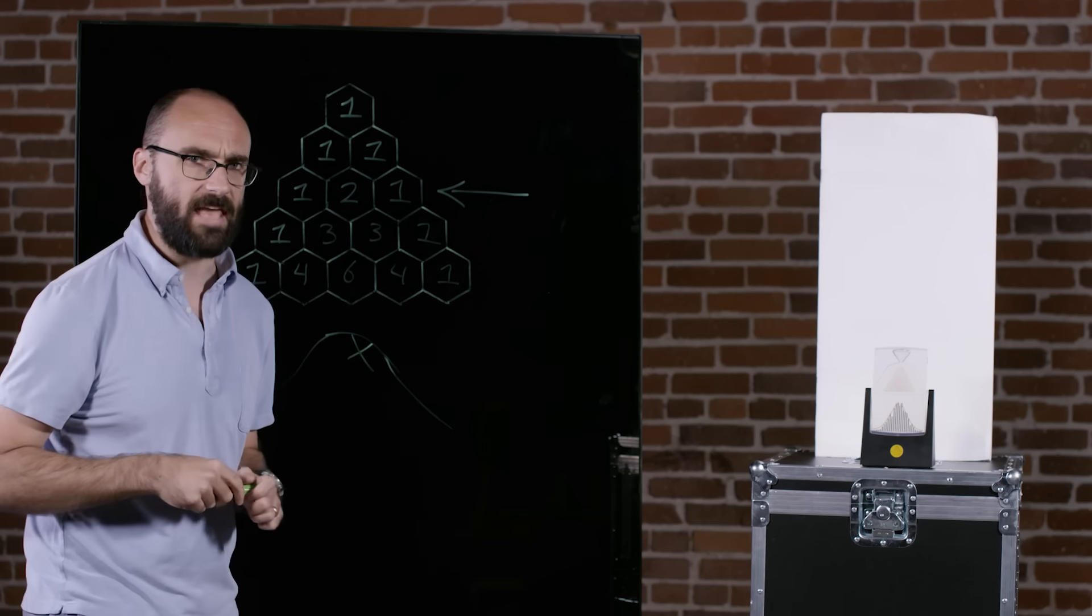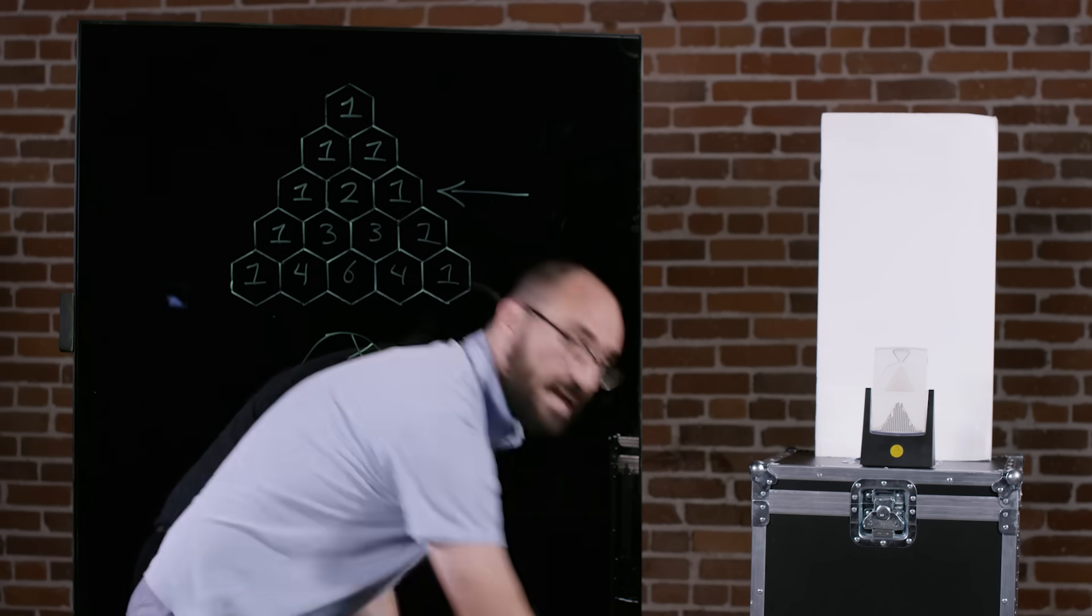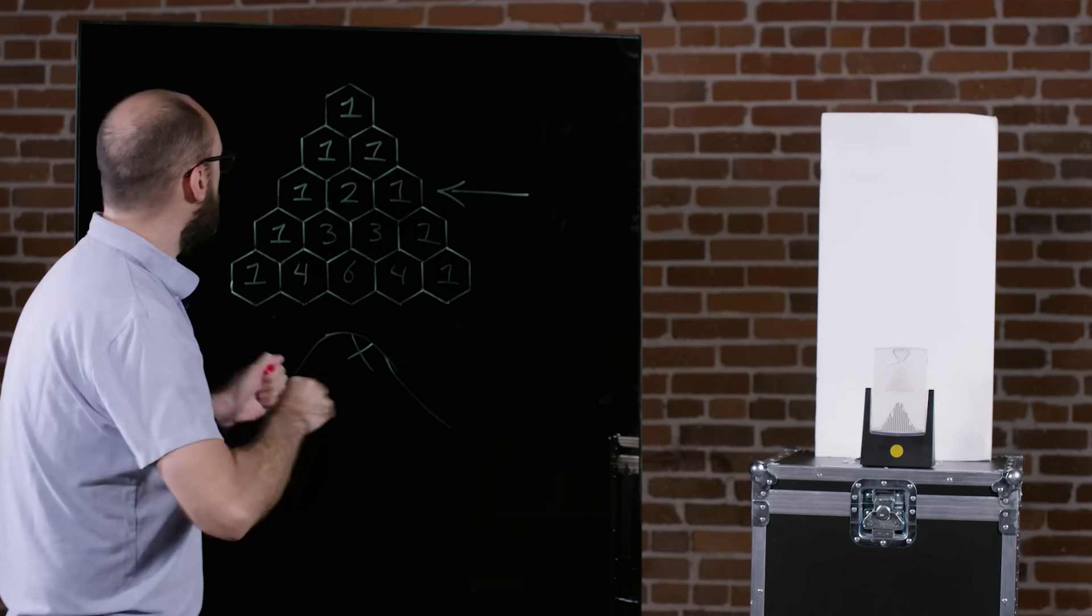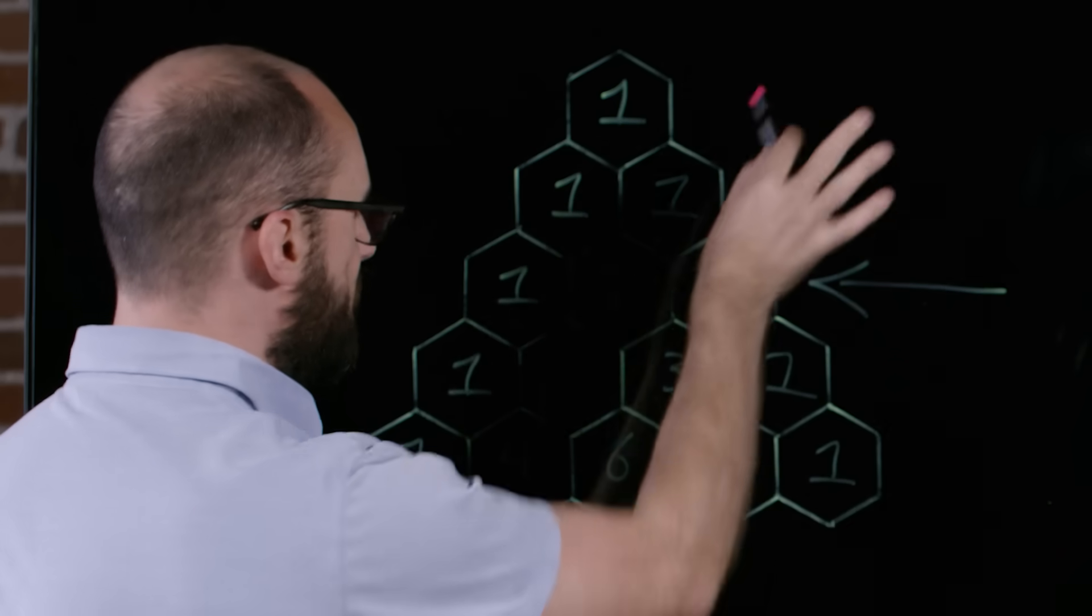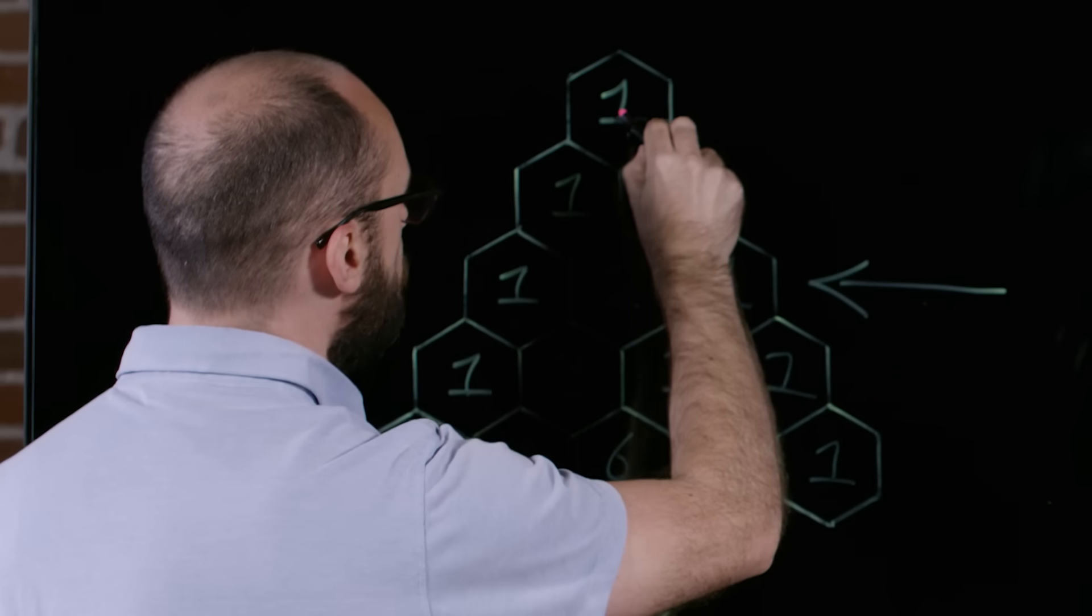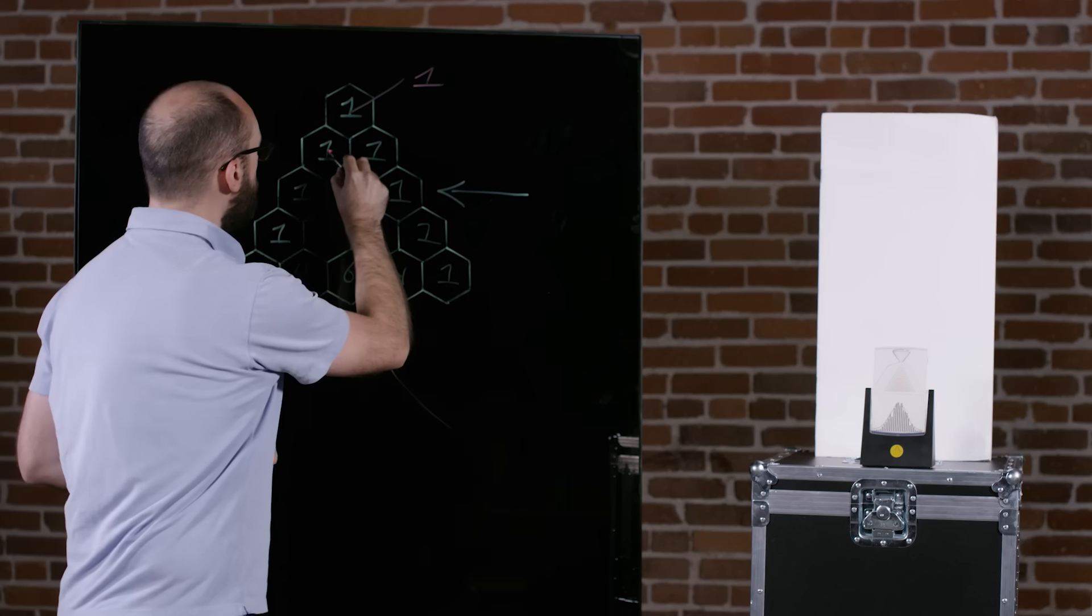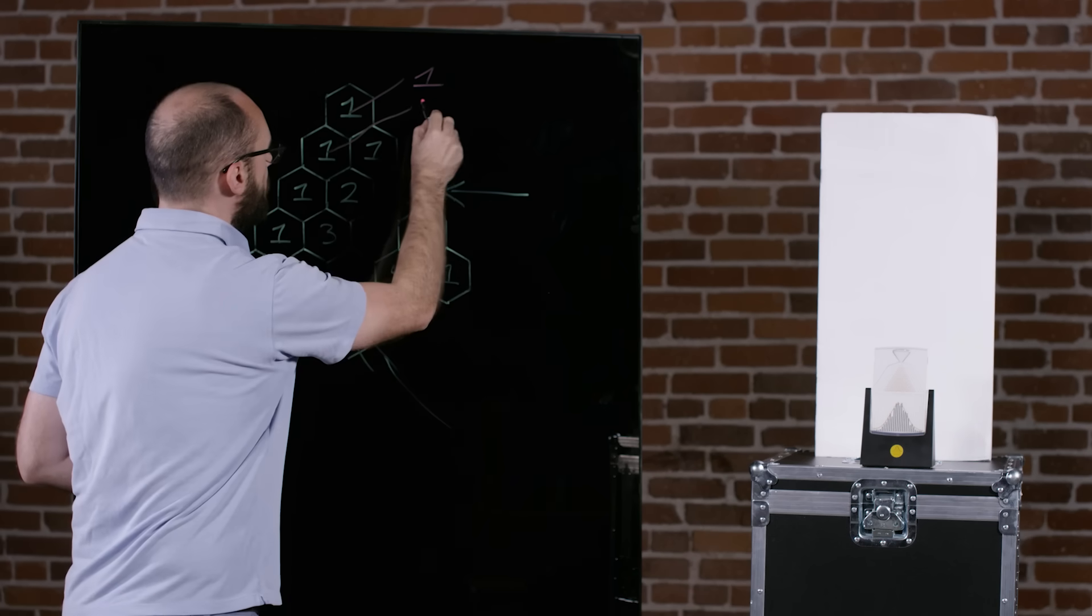But we're not done with Pascal's Triangle yet. There's all kinds of other fun things you can do with it. For instance, let's take a look at the diagonals. I'm going to do diagonals like this and that's why I drew hexagons. So, if I draw a diagonal out from this first number, I get a one. Now, if I go from this number diagonally out, I get one again.